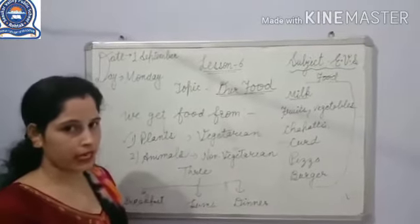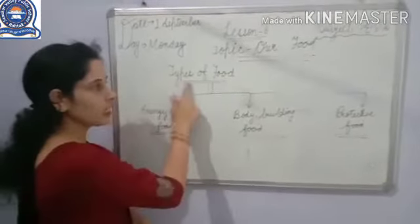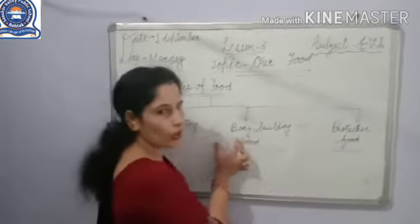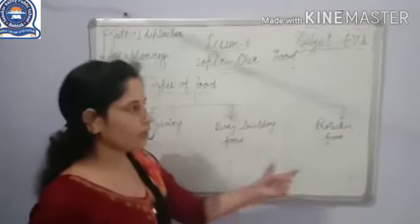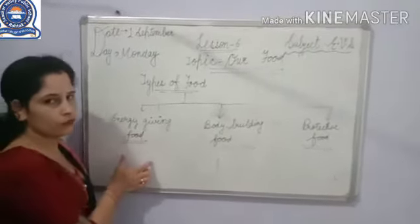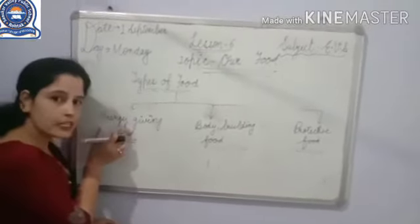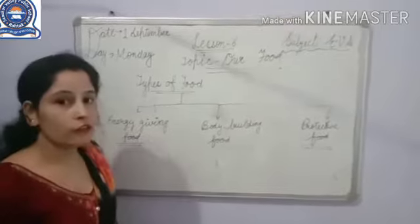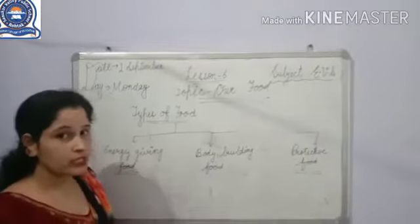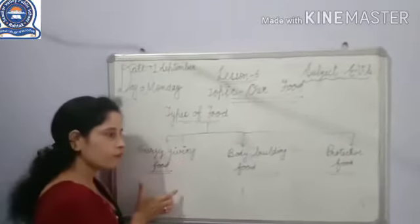There are three types of food. The first one is energy-giving food, the second one is body-building food, and the third one is protective food. Energy-giving food is the food that helps us to get energy — like wheat, rice, potato, sugar, cheese, etc. These are examples of energy-giving food.